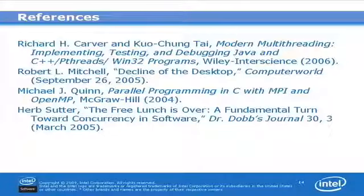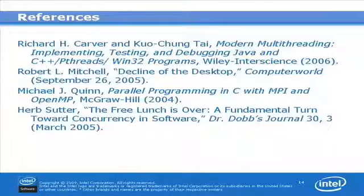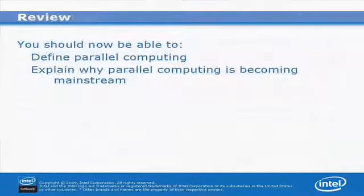The references shown here will give further information on the topics covered in this part. In this module, we've defined parallel computing and explained why parallel computing is now becoming mainstream. In Part 2, we're going to talk about ways that you can divide your serial code into subtasks that can be done in parallel.